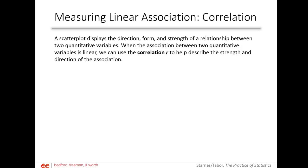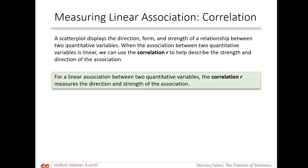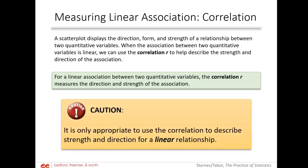For linear associations between two quantitative variables, the correlation — called R — measures the direction and strength. It is only appropriate to use correlation to describe the strength and direction of linear relationships. Highlight that.